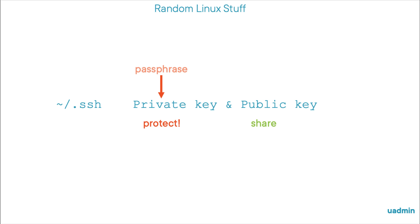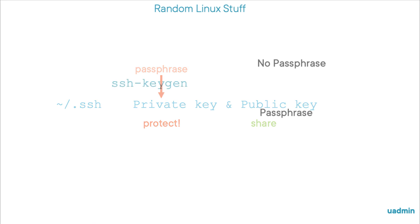The best way to protect yourself against that is to set a passphrase on your private key at creation time. This means that your private key can only be used after the passphrase is entered first, so as to unlock the key. The disadvantage is that whenever you want to connect to another system and your private key is needed, you'll have to type the passphrase yourself as well, which is secure, but also annoying. Let's first look at a quick example of how that works.